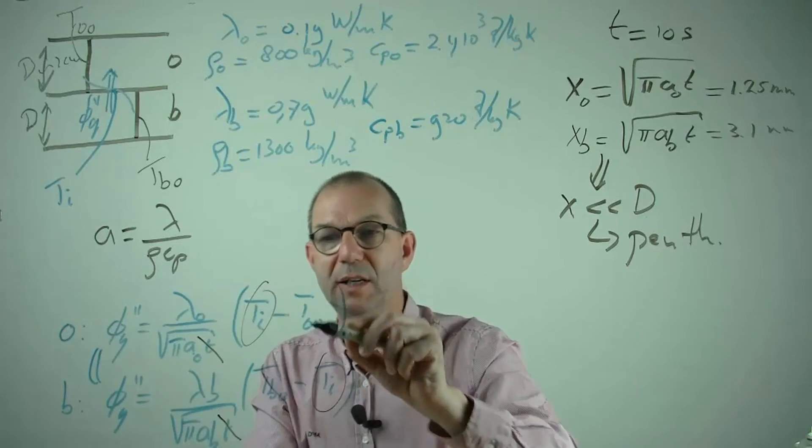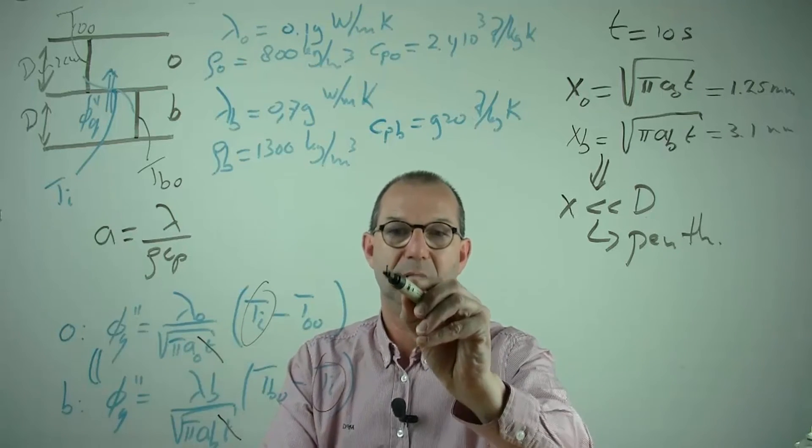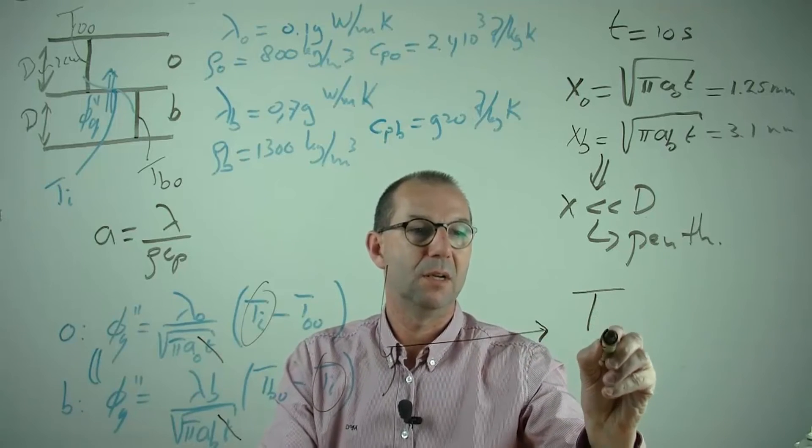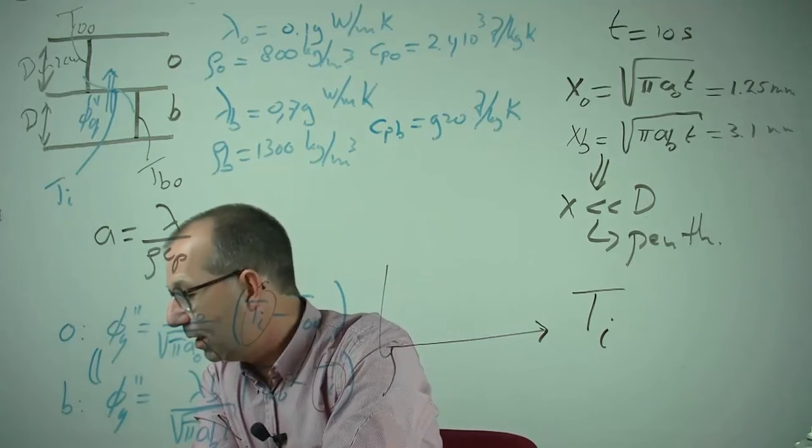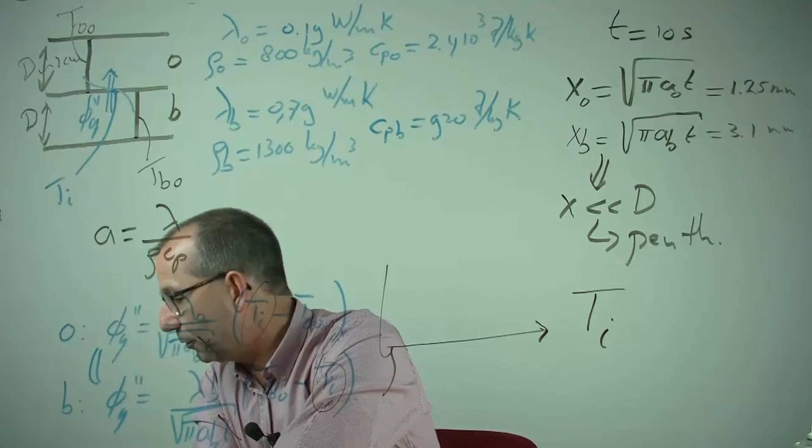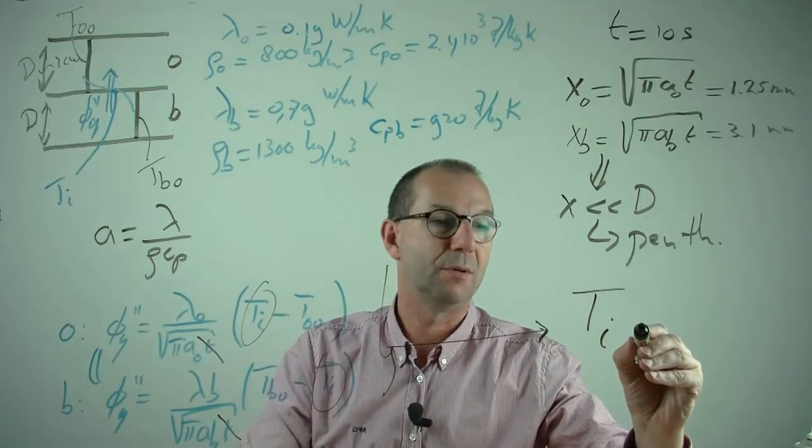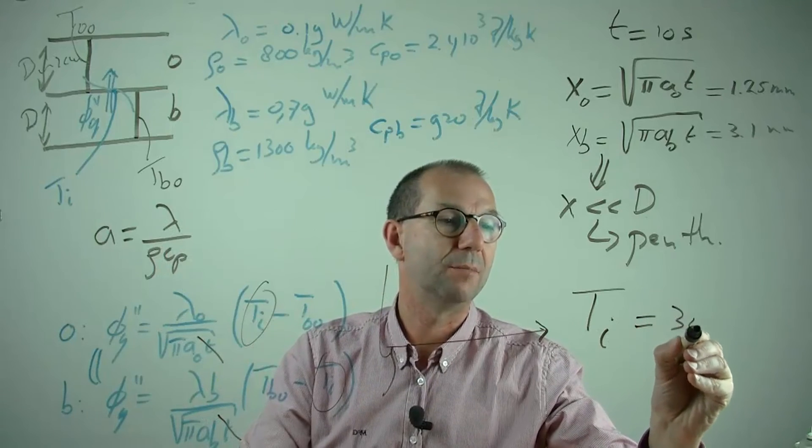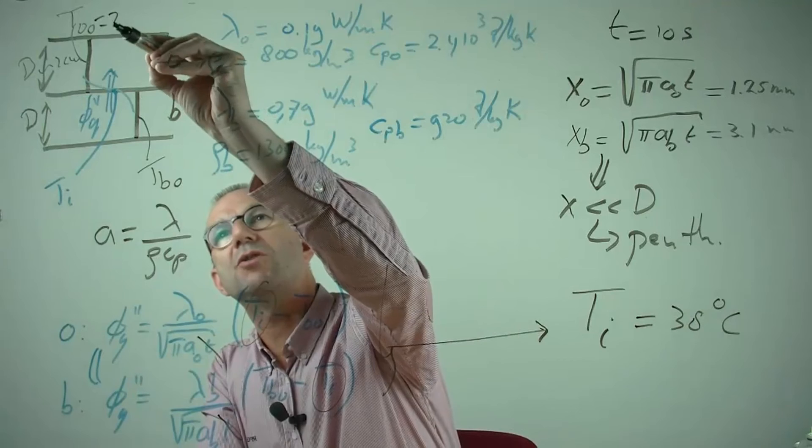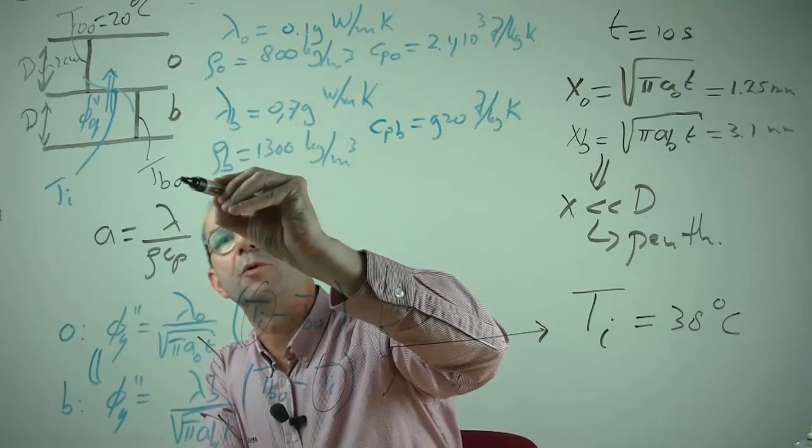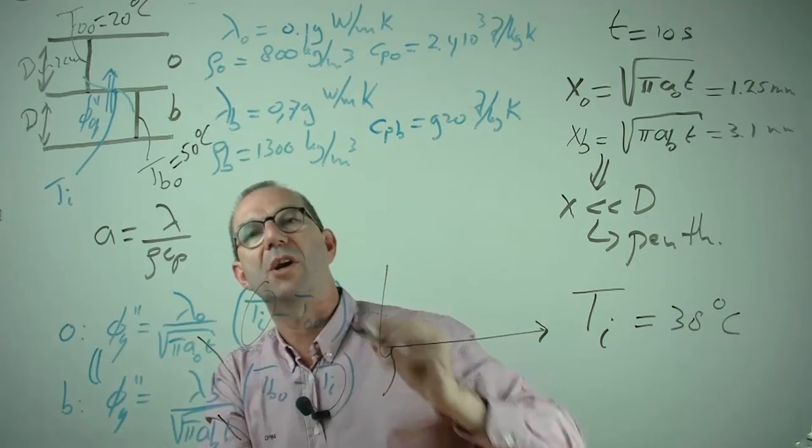So this is basically an equation that gives me the interfacial temperature. I can compute that, back it out of here, and let me look in my notes. The temperature of the interface is 38 degrees Celsius if you started with 20 on this side versus 50 on that side.